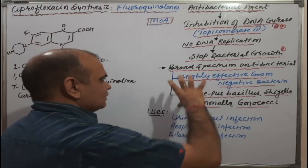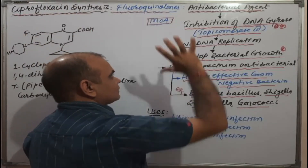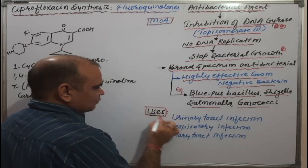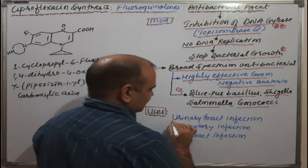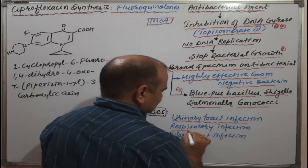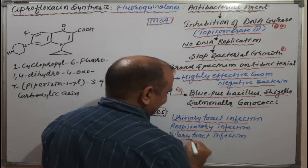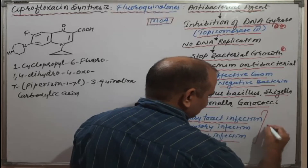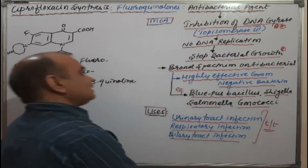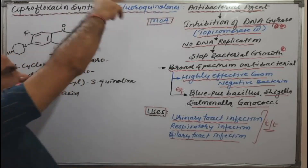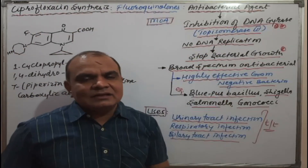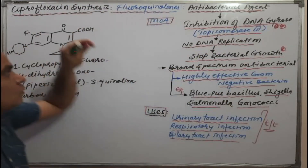On the basis of its mechanism, ciprofloxacin may be used in urinary tract infection, respiratory infection, as well as biliary tract infection. The treatment of these bacterial diseases involves this DNA gyrase inhibitor, that is ciprofloxacin.